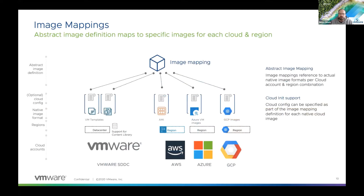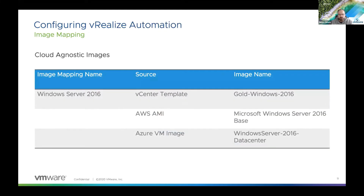We're going to jump straight into the demo. One thing pre-configured to save time is image mappings. We have this concept of mappings for images, flavors, networking, and so forth. An image mapping is how we map our images — whether built on-prem in vSphere or in the cloud — specifying OS type and version. You can create one-to-many mappings: for example, a 'Windows Server 2016' image mapping can have multiple sources, so when deploying to a specific cloud platform, the mapping dynamically selects the correct image.